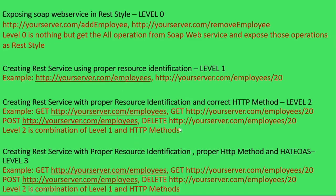In Level 3, we are going one level further. In Level 2, we are already using perfect resource identification with the proper HTTP method. But in Level 3, we go one more level advanced. That is called HATEOAS. For example, in the case of Facebook, I am adding one post. That post can be liked, shared, or unliked — many people can perform any action on that post.